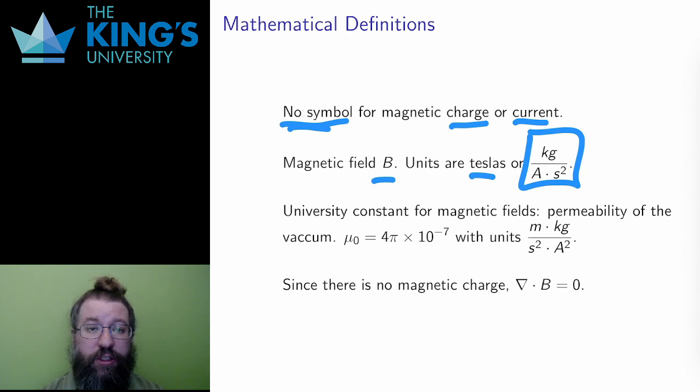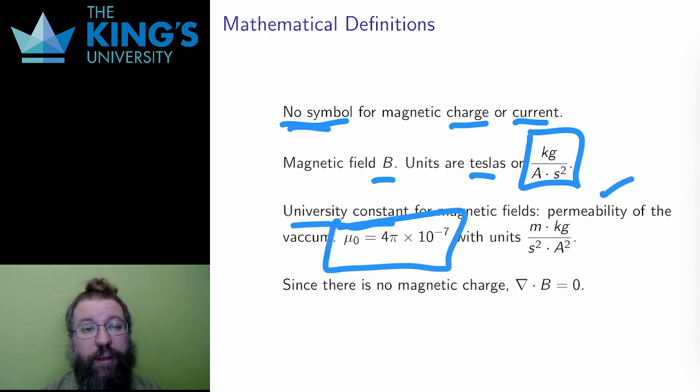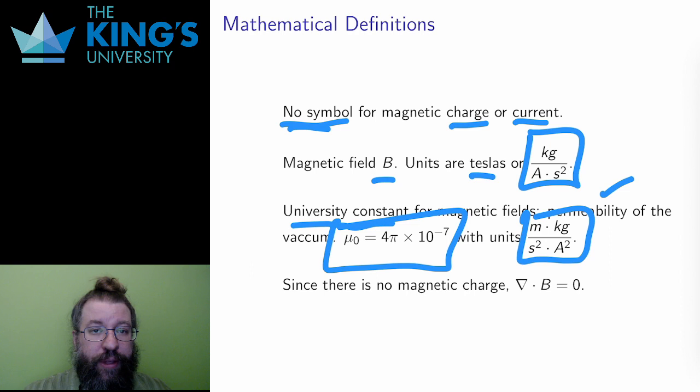There again is a universal constant that describes the strength of magnetic field interactions. This constant is called the permeability of the vacuum and has value of μ₀ = 4π × 10⁻⁷ with units meters kilograms over seconds squared amps squared. This universal constant is not independent of the other constants, it is in fact a derived value, and this explains why it has a value involving π instead of just some arbitrary decimal.